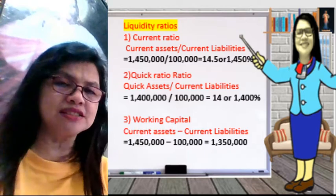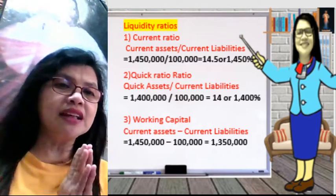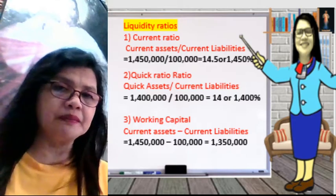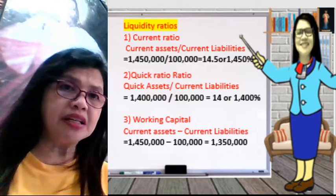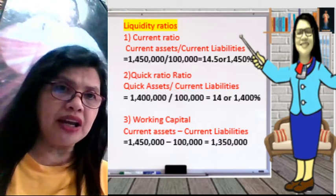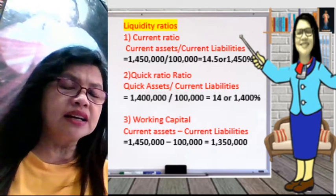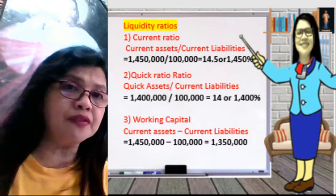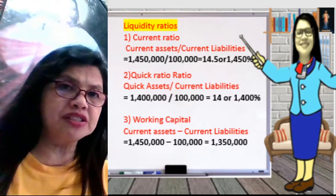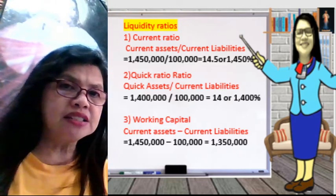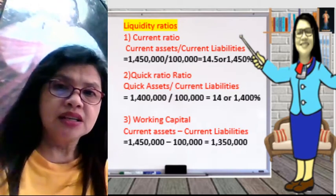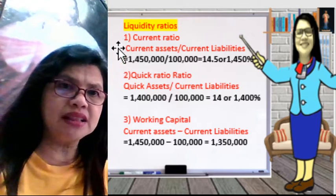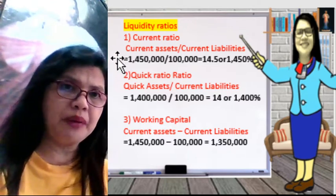Let's start with the liquidity ratios. When we say liquidity ratios, that means we are measuring the capacity of the company to pay its current liabilities. We use the current ratio, the quick ratio, and the working capital. The current ratio is current assets over the current liabilities. Here we have 1,450,000 current assets divided by current liabilities of 100,000, so it is 14.5 or 1,450%. ABC company has the capacity to pay its current liabilities at 1,450%.